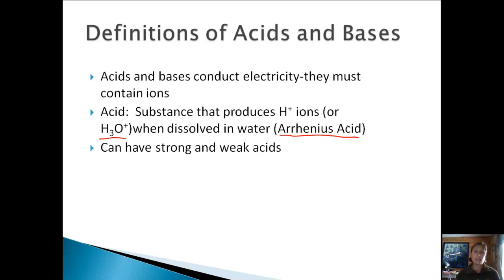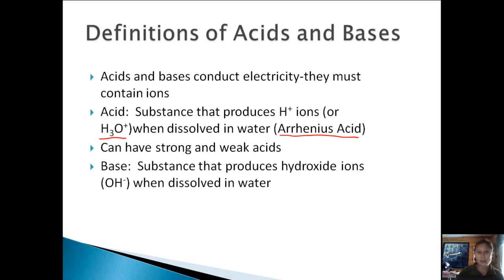We can have strong and weak acids just like we can have strong and weak electrolytes. A strong acid will completely dissociate or break apart into its ions. A weak acid—some of the hydrogens will come off, but on some they won't. So it's weaker and won't dissociate as completely as something that's strong.